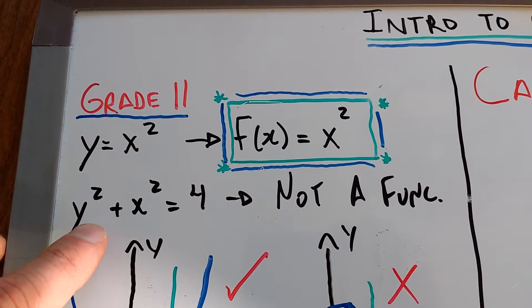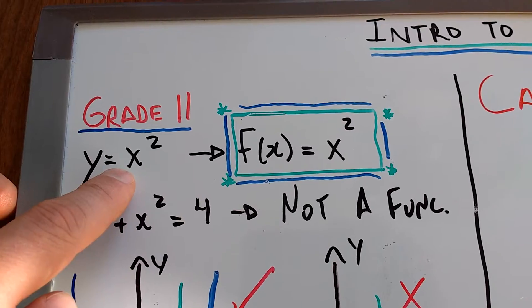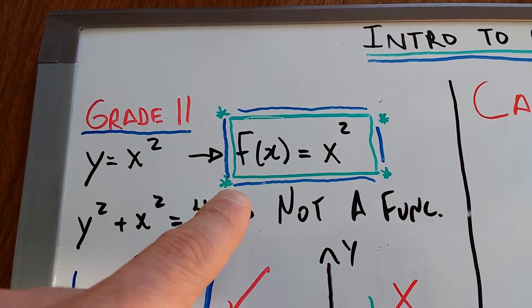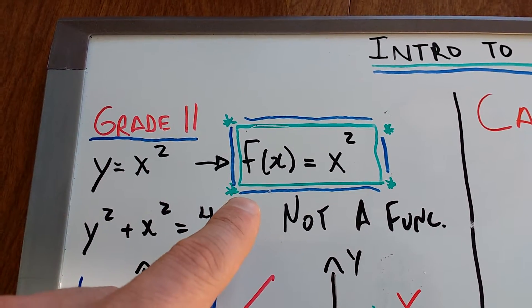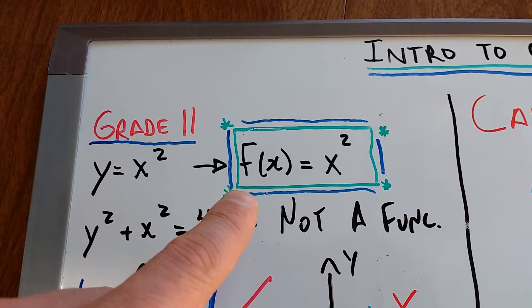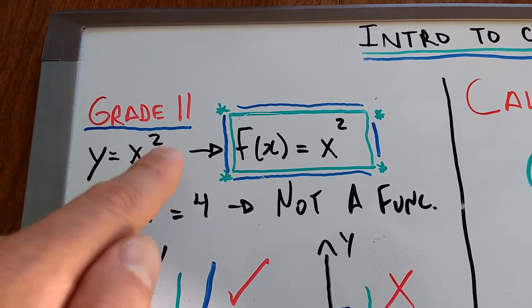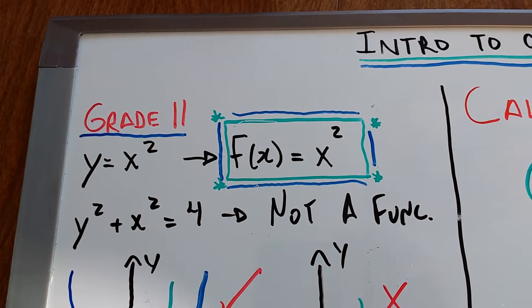So both of these are relations, but only one of them is a function. And we developed this new notation, function notation. So instead of saying y equals x squared, we now say f at x equals x squared. So the function, this part here, at x, at the value x, is equal to some particular value.